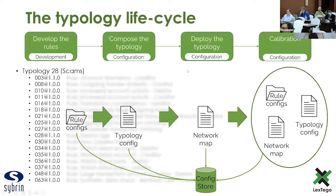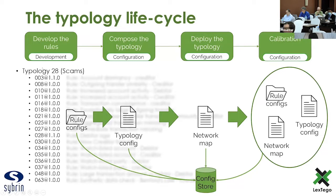I briefly wanted to take you through the typology lifecycle because this illustrates the true power of the platform in terms of its configurability. The rules themselves are developed as rules modules that run discretely and that you can link into a specific typology and a flow through the network map. The rule configurations drive the rules' behaviors — every rule has specific parameters that determine how that rule functions and how its output is formatted and structured. From the rule configurations, those rules are then composed into a typology configuration. For example, typology 28, which indicates a scams typology, consists of 18 rules, and these rules and their score contribution to the typology is defined in the typology configuration.